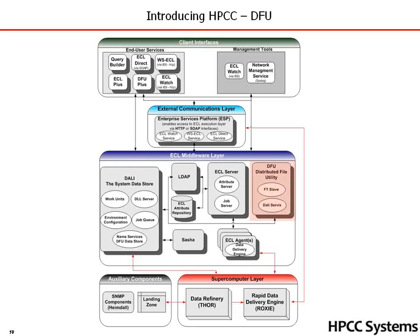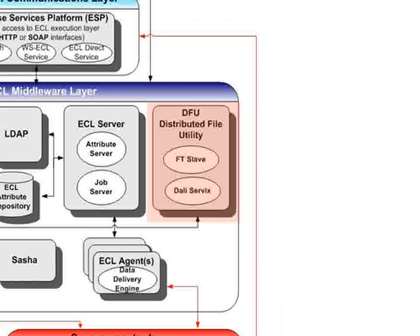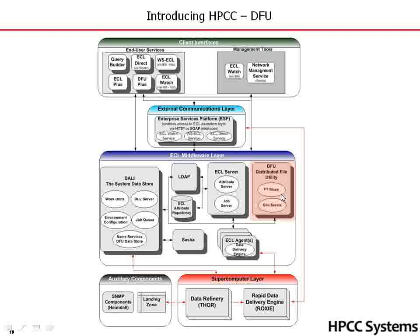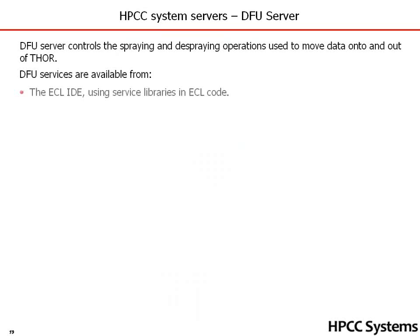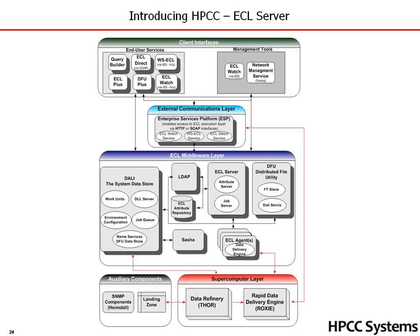The next middleware piece we want to look at is called the DFU, or Distributed File Utility. The DFU server controls the spraying and despraying operations used to move data onto and out of Thor. DFU services are available from three sources: first, the ECL IDE using service libraries in ECL code; second, the ECL Watch web-based utility; and third, the DFU command line interface, also known as DFU+.